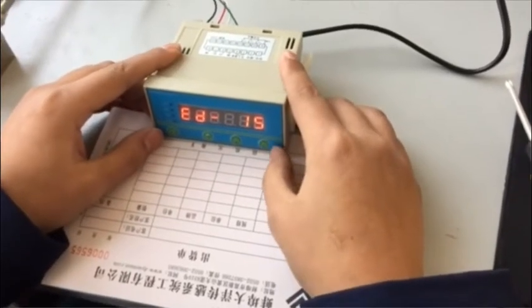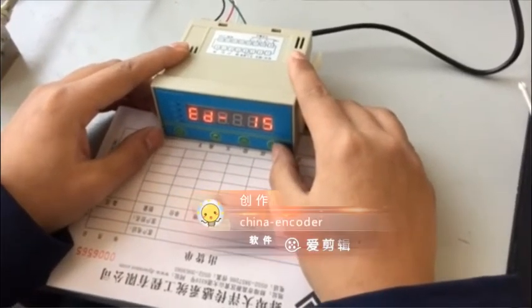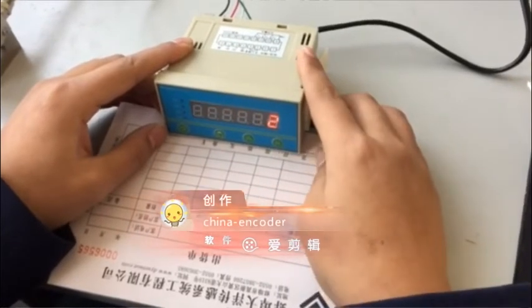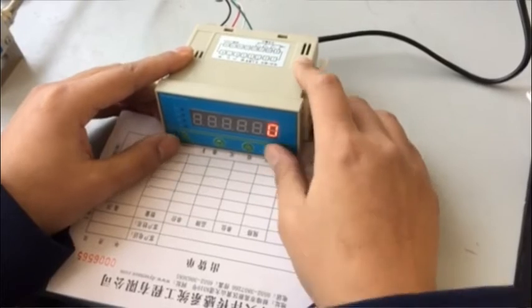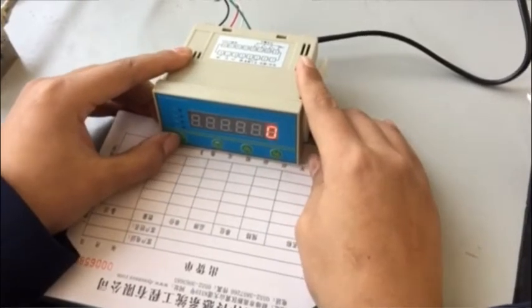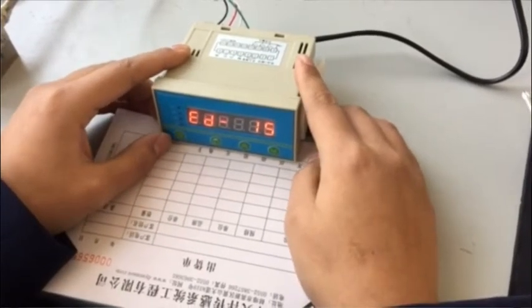Find AD15, press K4 to enter. Press K3 to modify the parameter set to zero, indicating no decimal point, then press K1 to confirm.